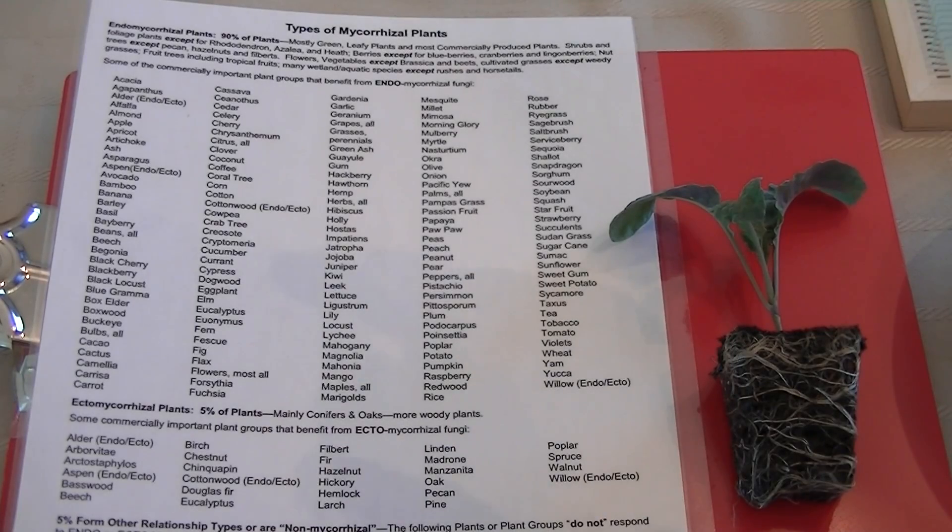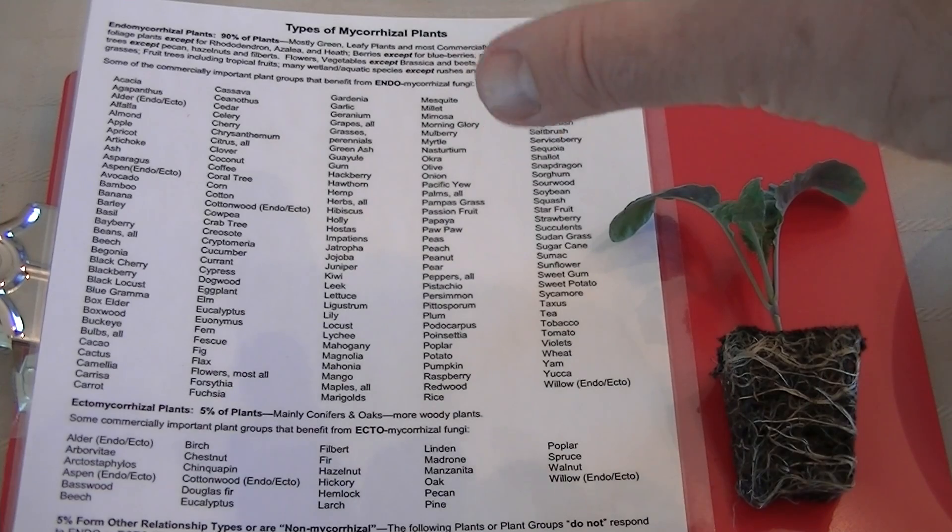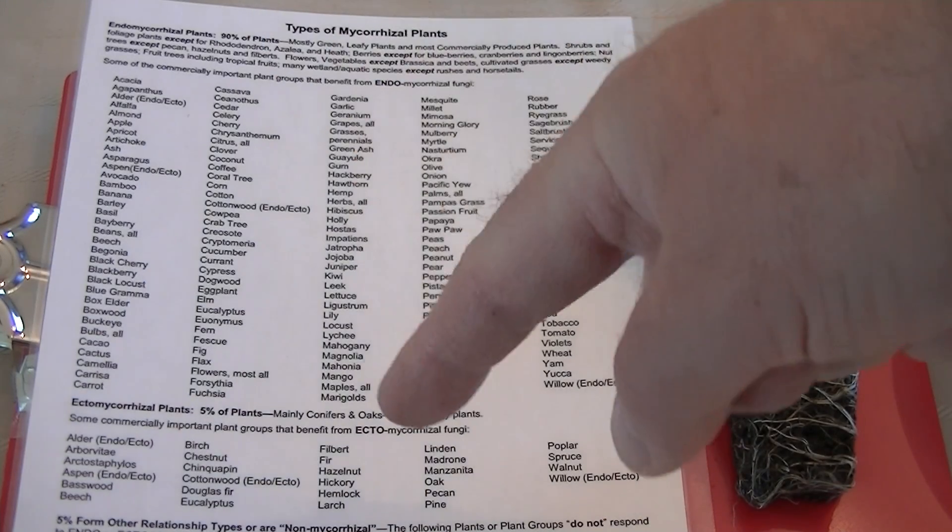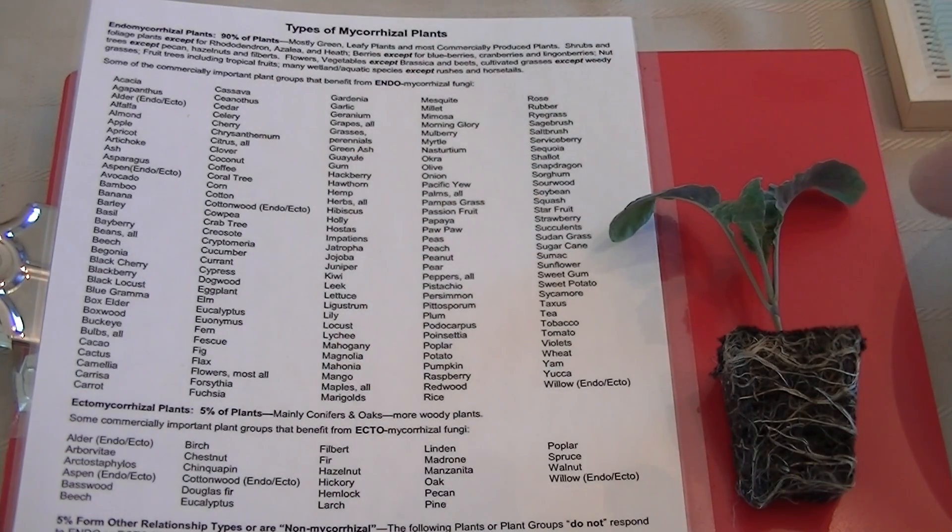So in turn, you can also look at it this way. If we have 95% of the plants on this planet using some type of mycorrhizal fungi, the endo or the ecto, where does that come into play? Not so much the brassica.